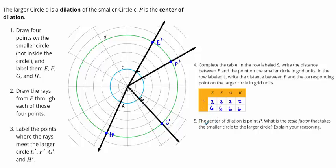Number five says the center of dilation is point P. What is the scale factor that takes the smaller circle to the larger circle? Looking at these points, from the smaller circle to the larger circle, we would have a scale factor of three, since we're multiplying each of these points by three. Two times three is six — going from two spaces to six spaces.